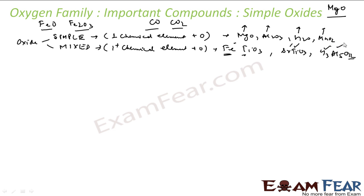We can also classify these oxides based on their acidic nature. This was based on the chemical element. We can classify them as acidic oxide, or basic oxide, or it can be amphoteric oxide, or it can be neutral oxide.